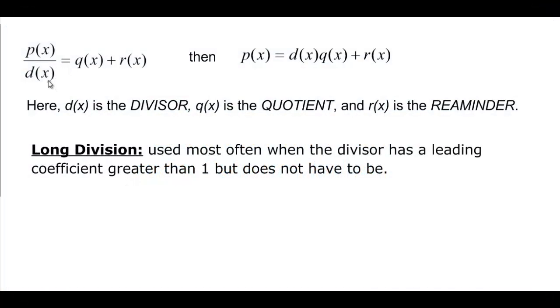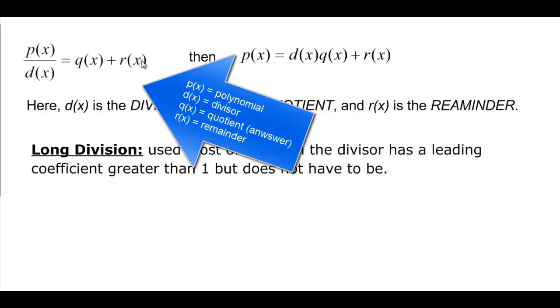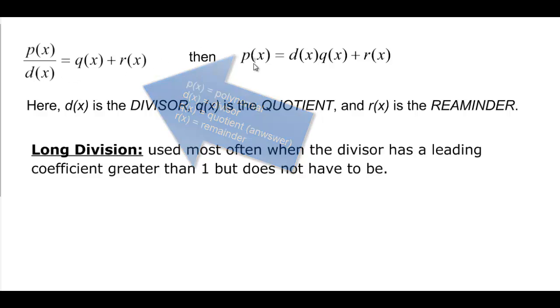P of X over D of X is equal to Q of X plus its remainder R of X. And if that's true, then we can say that P of X is equal to that D of X that we divided by times the quotient Q of X, which is what we came up with, plus the remainder.